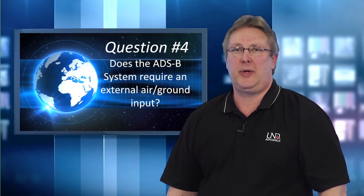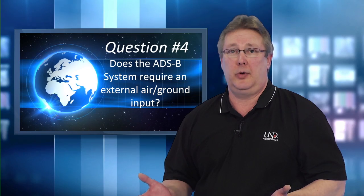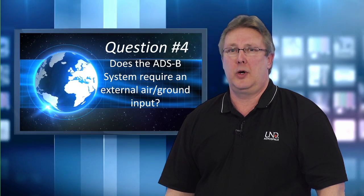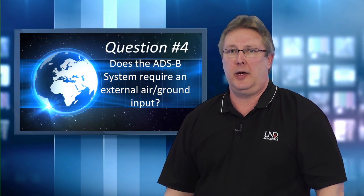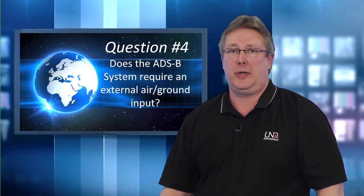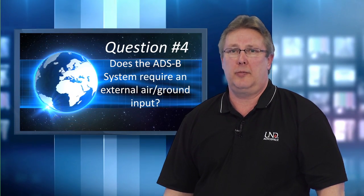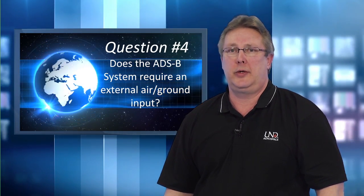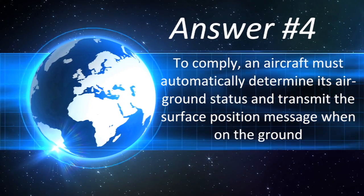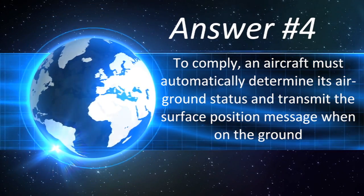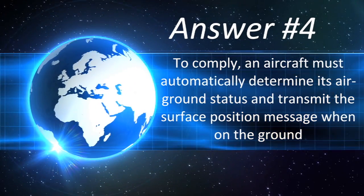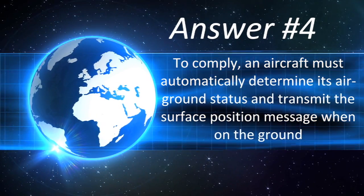Does the ADS-B system require an external air-ground input? Some require it from an external source. Some derive air-ground mode internally from GPS velocity, an airport database, and geometric altitude, or GPS velocity and airspeed. The length and width code is required by 14 CFR 91.227, and is only transmitted in the surface position message. Thus, to comply with the rule, the aircraft's ADS-B unit must automatically determine its air-ground status and transmit the surface position message — which includes the length and width code — when on the ground.